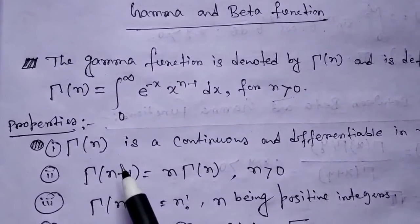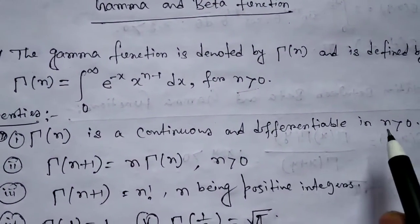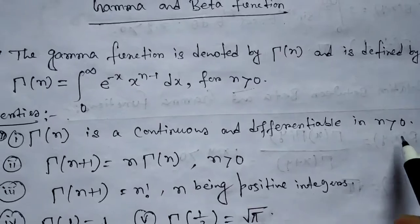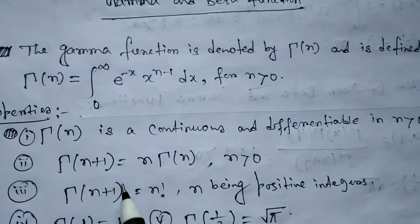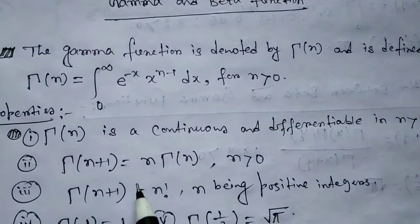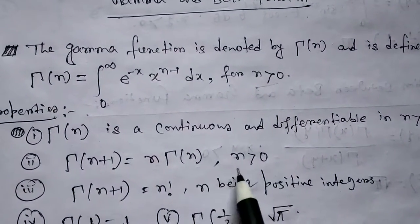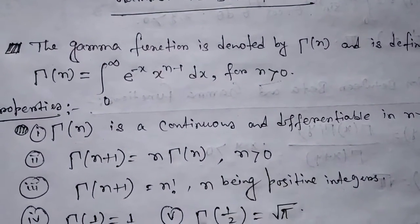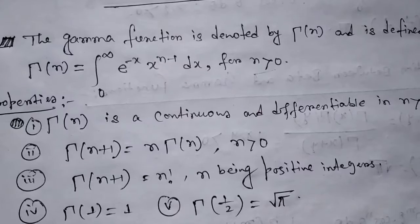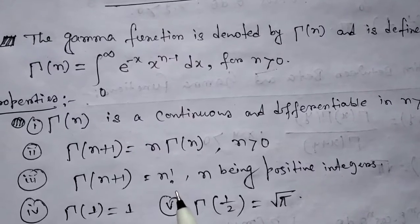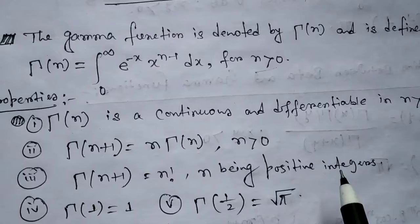Let us define some properties of the Gamma function. Property 1: Γ(n) is continuous and differentiable for n greater than 0. Property 2: Γ(n+1) = n · Γ(n), where n greater than 0. Property 3: Γ(n+1) = n factorial, where n is a positive integer.